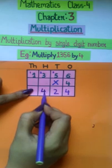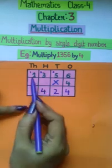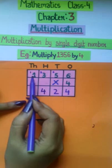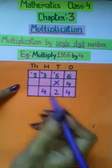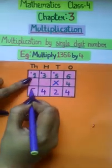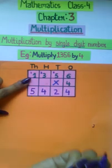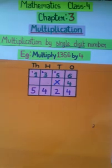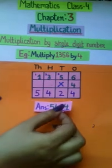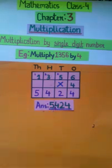And lastly, we multiply by the 1000's. 4 into 1, 4 plus 1 is 5. So the answer is 5,424. This was an example of multiplication by single digit number.